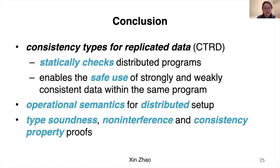To summarize: we introduce Consistency Types for Replicated Data (CTRD), which statically checks and enables the safe use of strongly and weakly consistent data within the same program. We provide operational semantics for a distributed setup and provide proofs for type soundness, non-interference, and consistency properties. Thank you for listening.